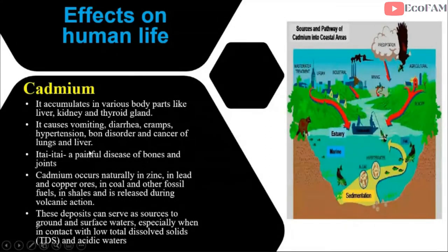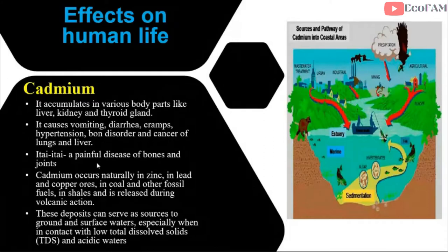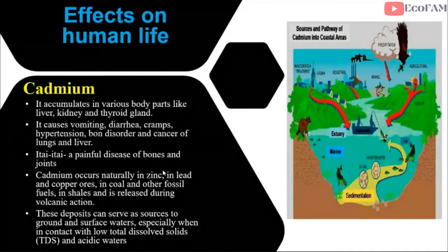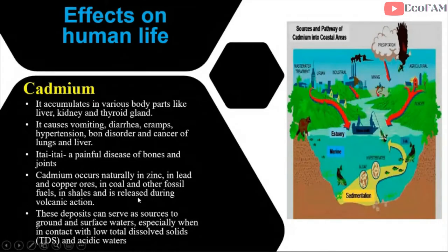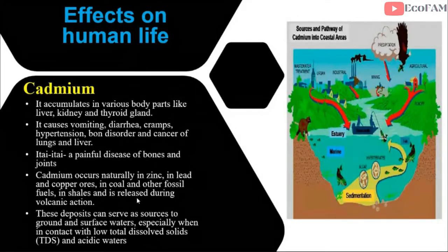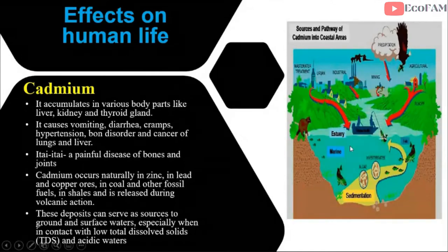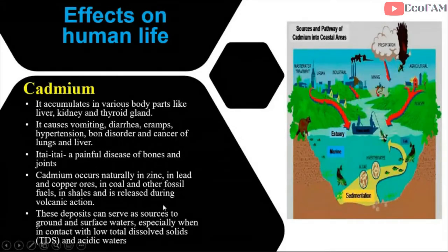Cadmium also causes a painful disease of joints and bones called Itai-Itai disease — 'Itai-Itai' means 'ouch ouch,' reflecting how painful it is. Cadmium naturally occurs in zinc, lead, and copper ores, in coal and fossil fuels, and in phosphatic rocks used in agriculture. It can also dissolve with other chemicals in surface and groundwater and change its oxidation states.